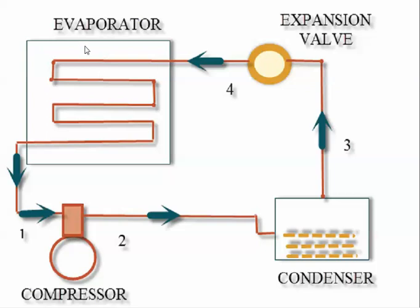Let us see the working principle of a vapor compression refrigeration system. In the vapor compression refrigeration system, low pressure refrigerant vapor is drawn by a compressor at stage 1. This low pressure refrigerant vapor is then compressed isentropically to a high pressure refrigerant vapor at stage 2.